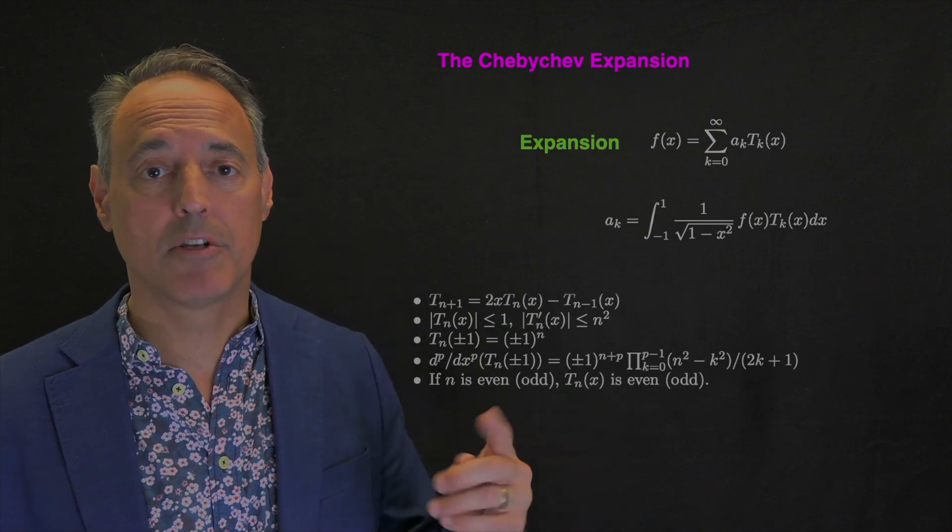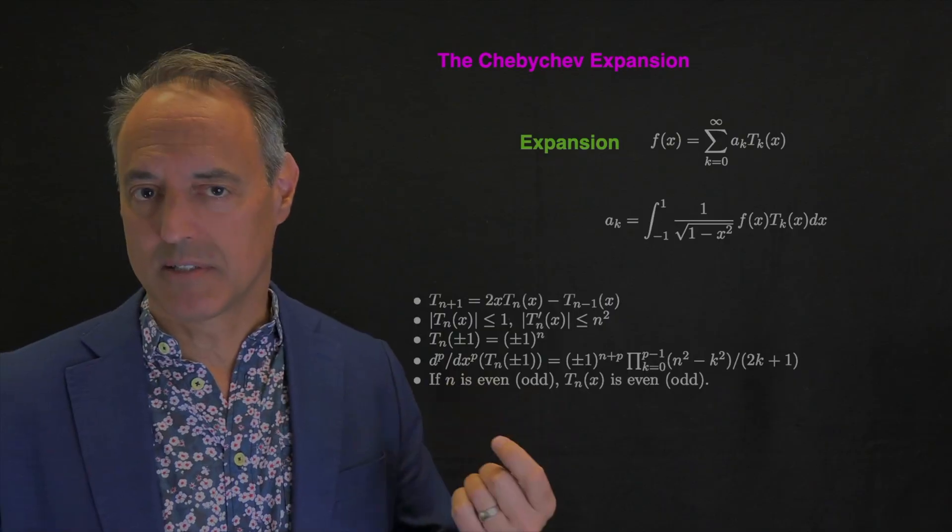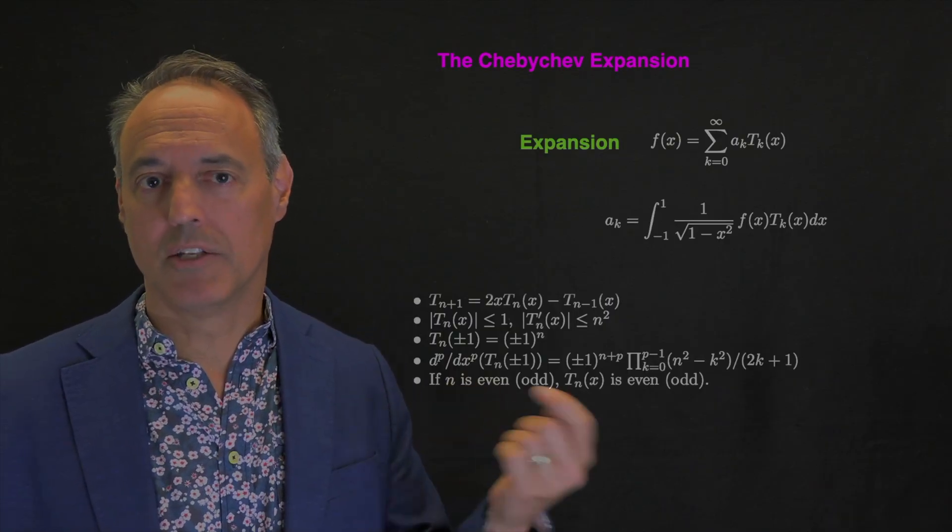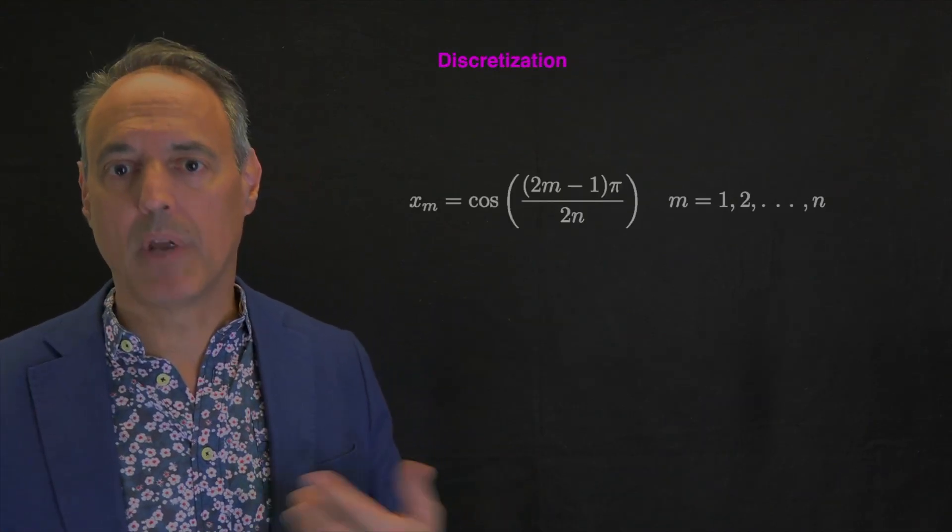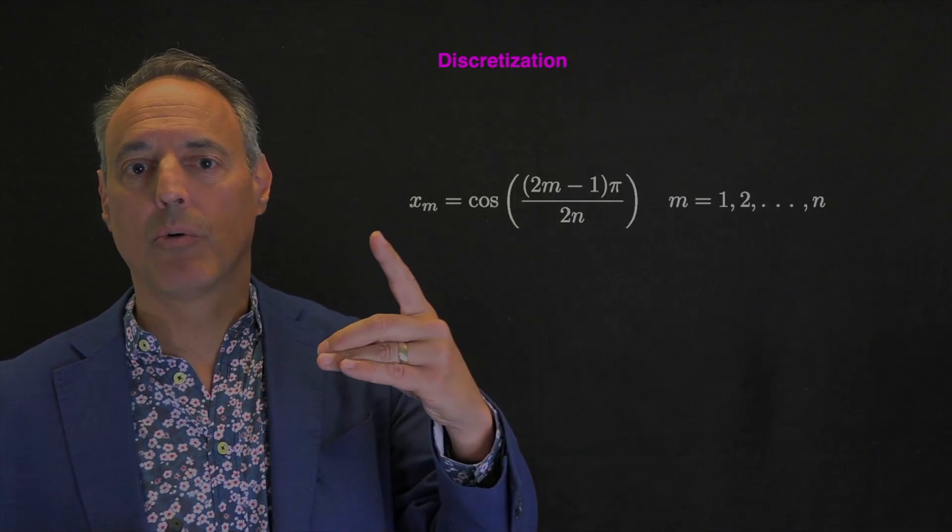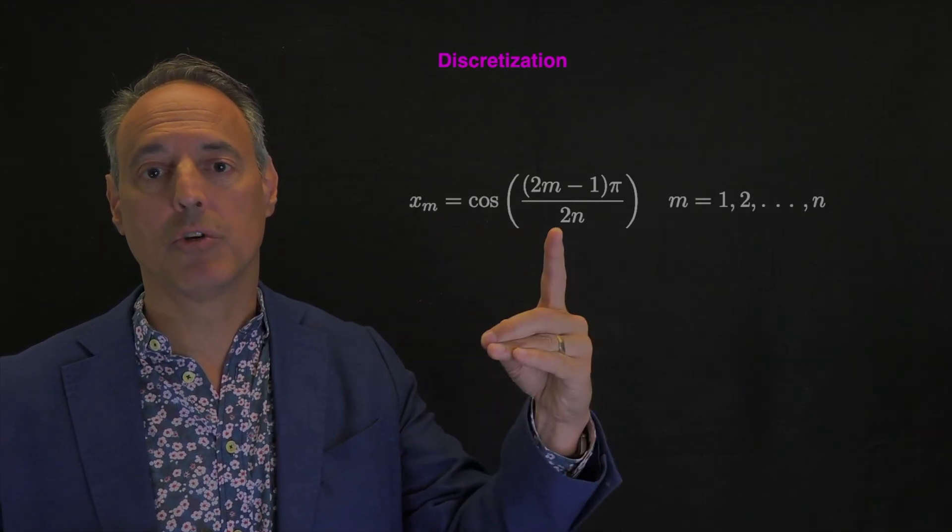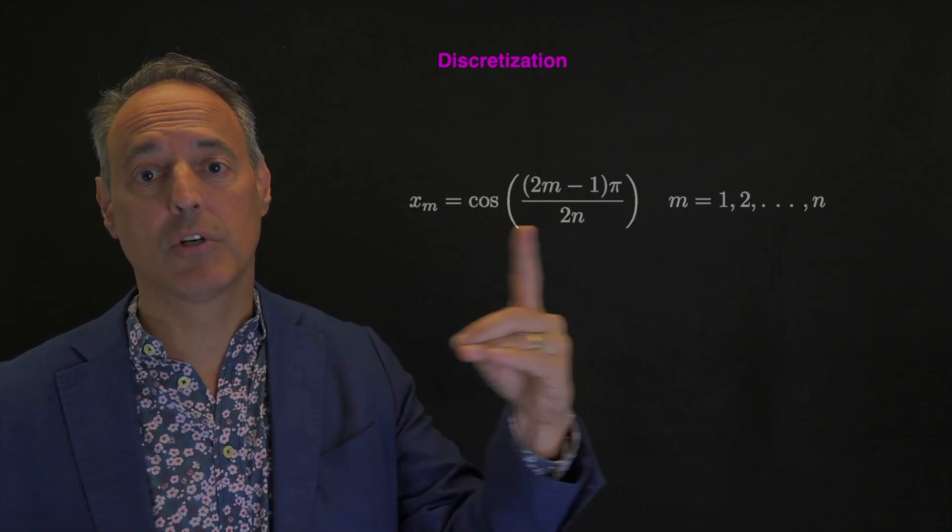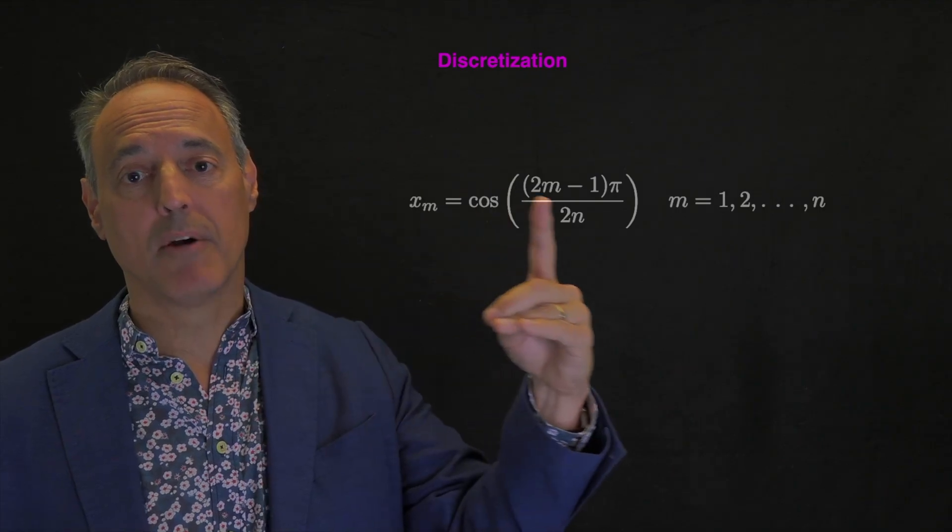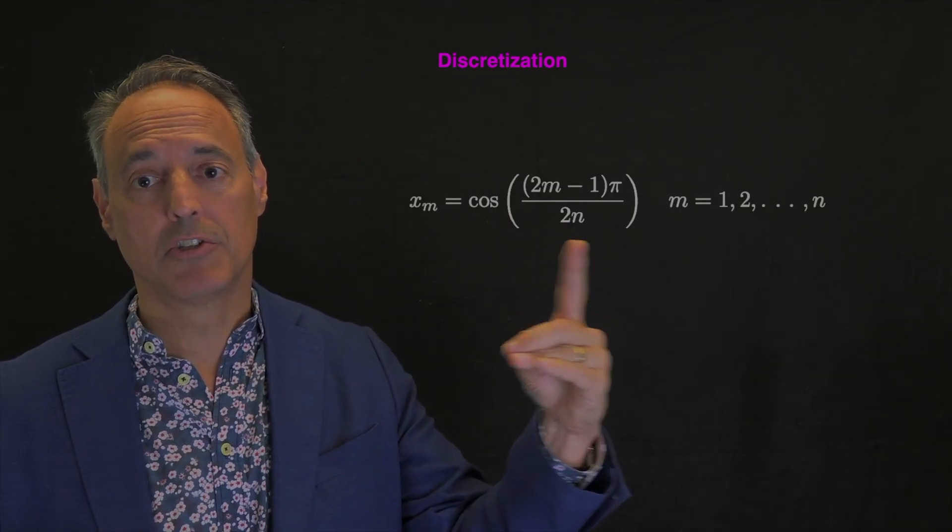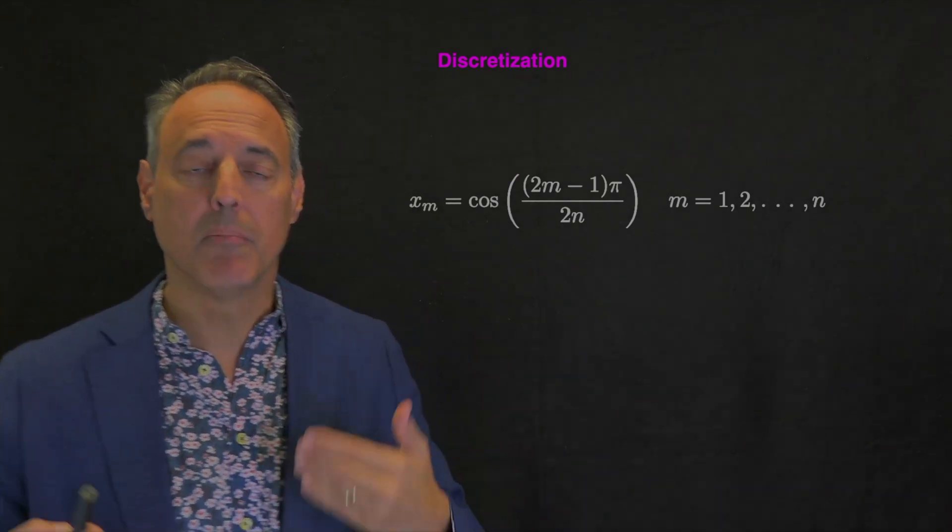You also have nice symmetry properties about odd and even, very much like sines and cosines. The sines are odd, the cosines are even. Just another expansion, but we have this pathway between our original representation x of m through discretization to the cosine transform. This is the transformation we want.